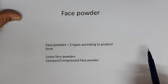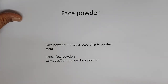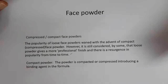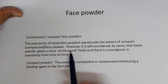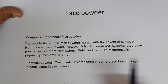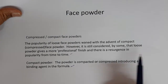Face powders can be of two types: loose face powders, and compact or compressed face powders. Compact face powders have additional properties which we will subsequently discuss. The popularity of loose face powders waned with the advent of compressed face powders; however, it is still considered by some that loose powder gives a more professional finish, and there is a resurgence in its popularity from time to time. Compact powder is made by compacting or compressing the powder with a binding agent to form a compact.